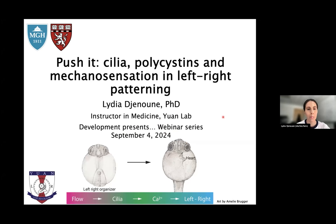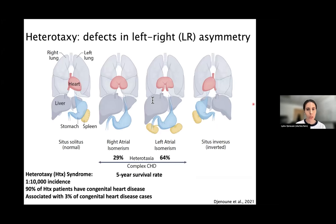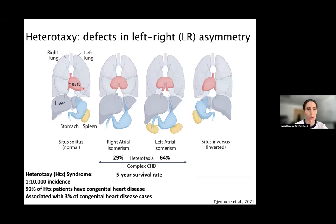My work revolves around cilia, polycystin, and mechanosensation in left-right patterning. I'm going to start by telling you why we're interested in left-right patterning. Despite an apparent external symmetry, vertebrates exhibit a striking left-right asymmetry in the structure and position of their internal organs — for instance, the heart and stomach on the left and the liver on the right side.